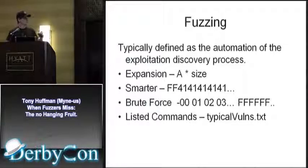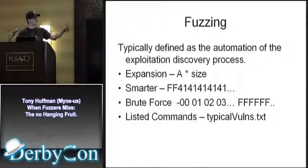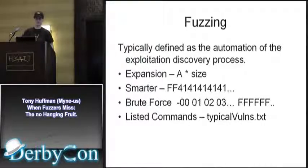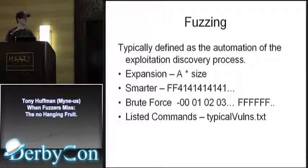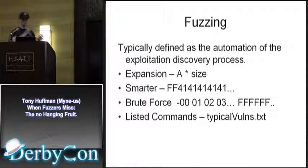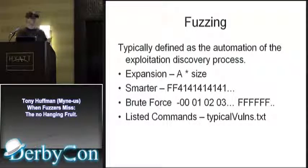A little bit of definition on fuzzing. Fuzzing is typically defined as the automation and exploitation discovery process. There's expansion fuzzing where you take a character, expand it, put it into a buffer, and wait for it to overwrite EIP or the heap manager, or hopefully overwrite data for a pointer. You can get smarter where you have something like 0xFF as your integer — it's the size of the payload coming after it — and it does a plus one to wrap it to zero, so you're pushing a bunch of stuff into a zero-size buffer. That's another exploit.